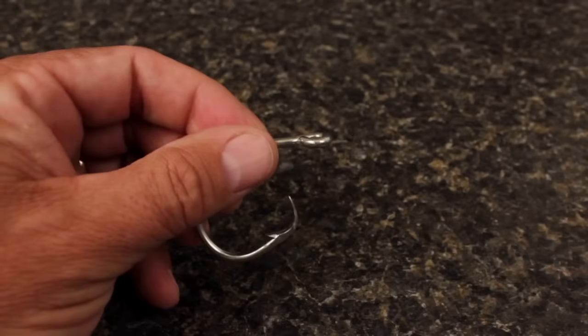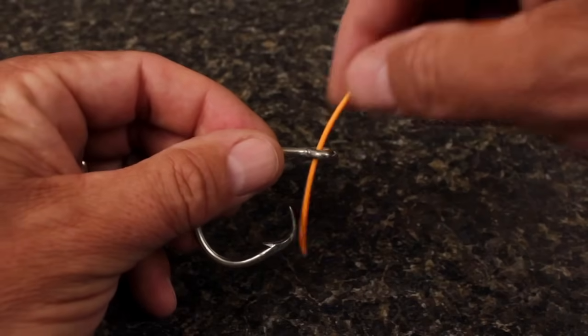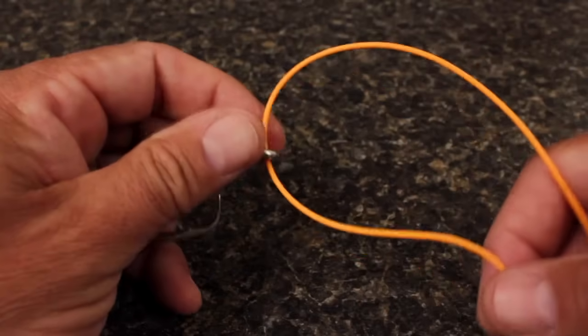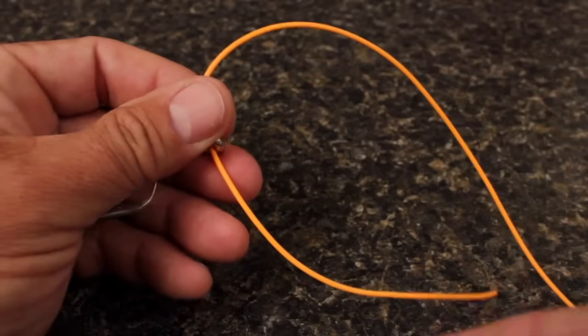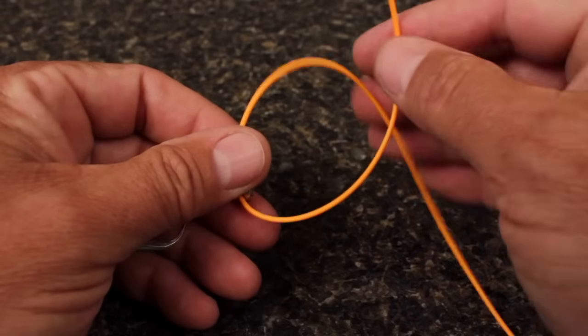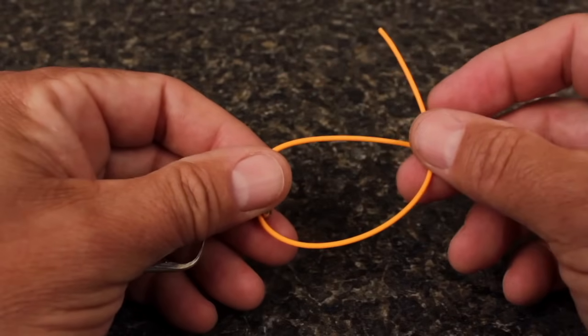To tie the Davy Knot, hold the hook in your left hand in an upright position and feed the line down through the eye. Bring the tag end over top of and around the running line and then back over top of itself.